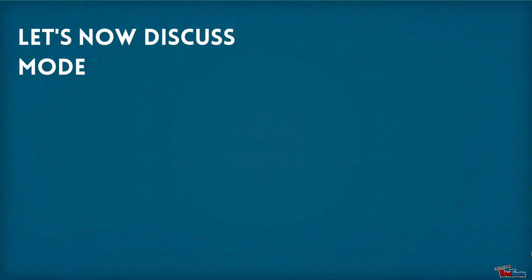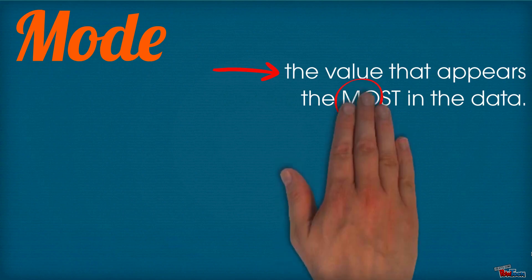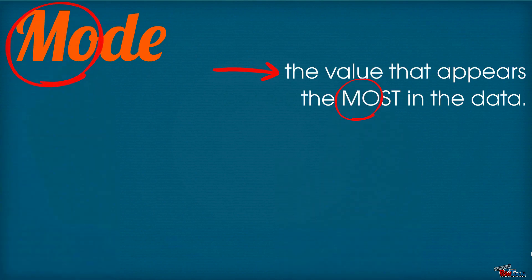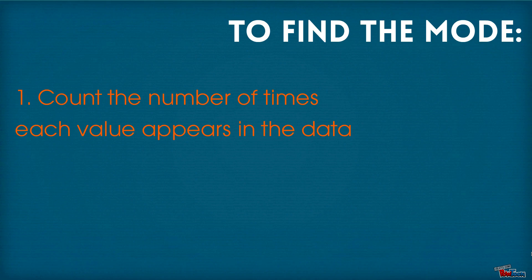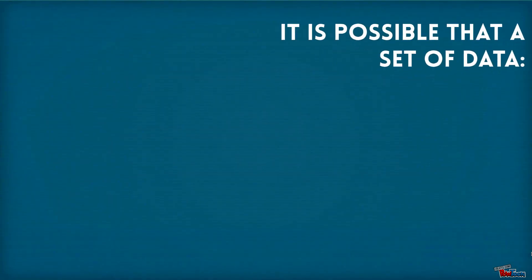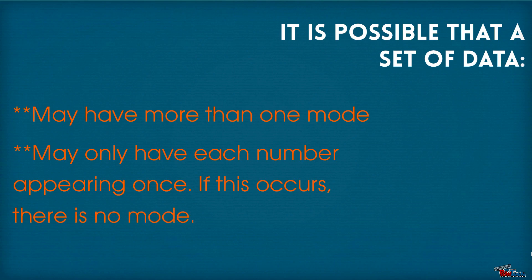Let's now discuss mode. Mode is the value that appears the most in the data. I like to remember mode by remembering that mode and most both start with M-O. To find the mode, count the number of times each value appears in the data. It is possible that a set of data may have more than one mode, or may only have each number appearing once — if this occurs, there is no mode.